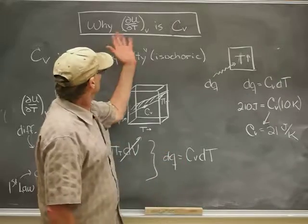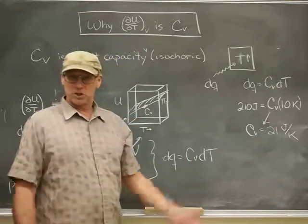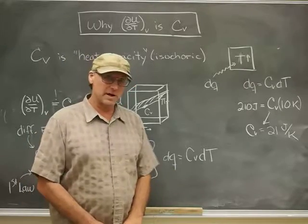And so that's how we know that ∂U/∂T at constant V is legitimately called the isochoric heat capacity.